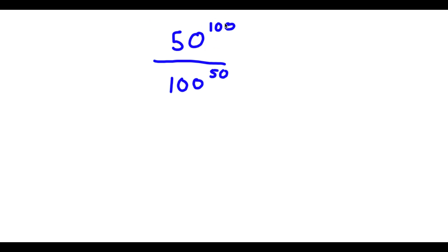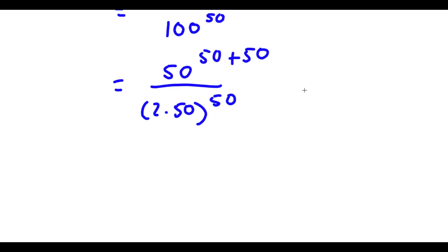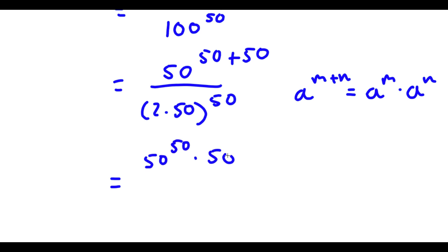Alright, so I have 50 to the power of 100 over 100 to the power of 50. Now 100, we can rewrite this as 50 plus 50. So now I have 50 to the power of 50 plus 50 over — now 100, this is the same thing as 2 times 50. So over 2 times 50 to the power of 50. If I have something in the form a to the power of m plus n, this is equal to a to the power of m times a to the power of n. So 50 to the power of 50 plus 50 is going to equal 50 to the power of 50 times 50 to the power of 50.